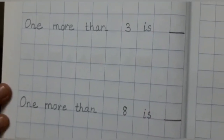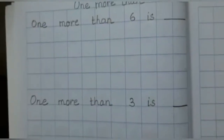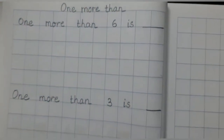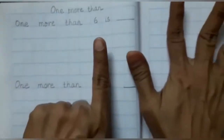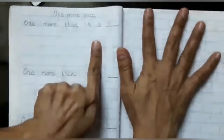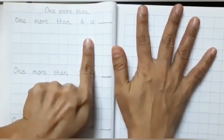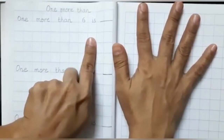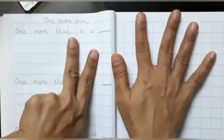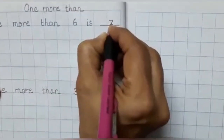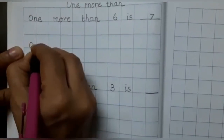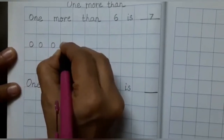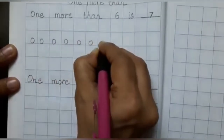Now children, tell me: one more than six is which number? Let's do it with the help of fingers. Here I have five fingers and six. If I have to show one more than six, I have to add one more finger. So, one more than six is seven. Let's write number seven, and here we are going to draw seven balls: one, two, three, four, five, six and seven.